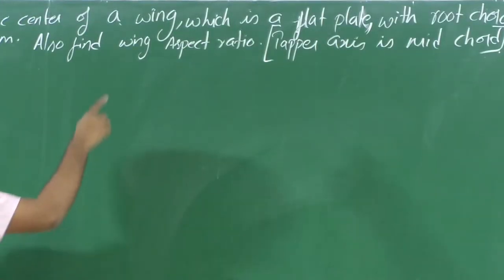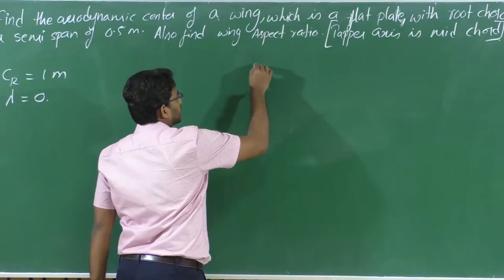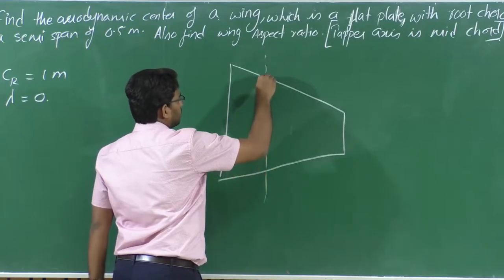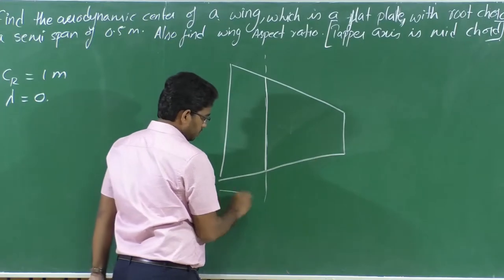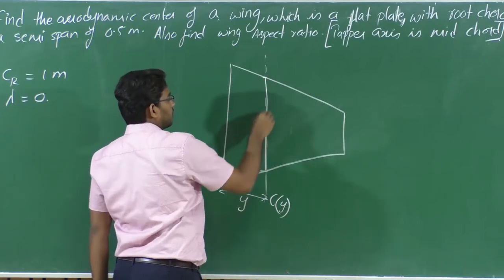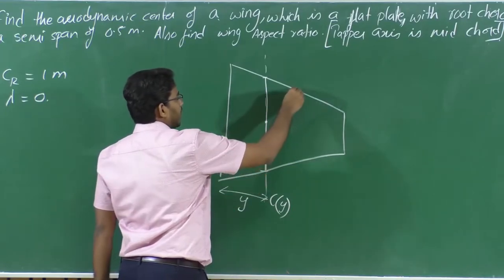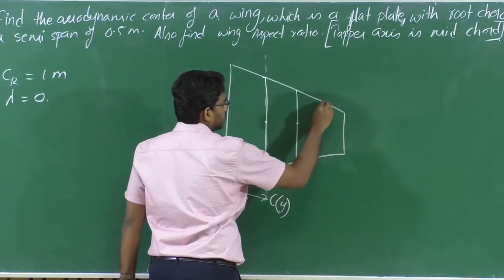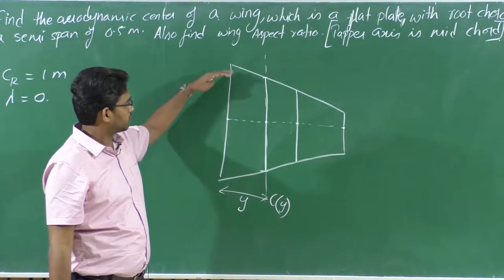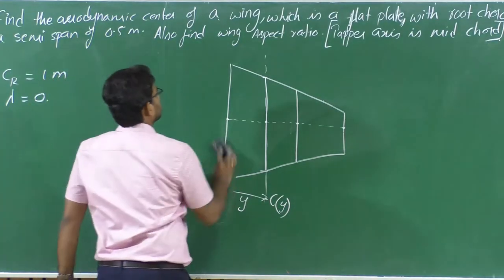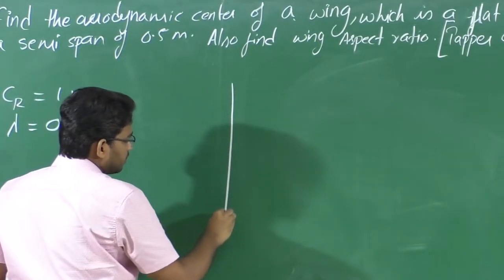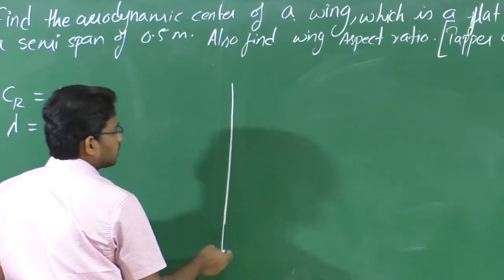What do we mean by tapered about mid chord? Consider a wing — a tapered wing. At any spanwise location, you have a corresponding chord. If you locate C/2 at any spanwise location, all these C/2 points will lie on a particular straight line. That is the definition of the taper axis. According to this question, it is a flat plate configuration, and we can get a rough idea about the wing planform from the given information.